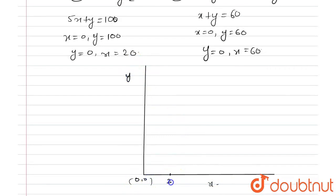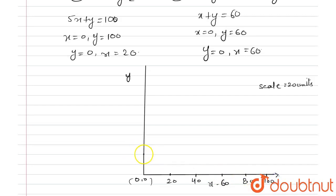On the x-axis the points are: 20, 40, 60, 80, and 100. Similarly on the y-axis the points are: 20, 40, 60, 80, and 100.